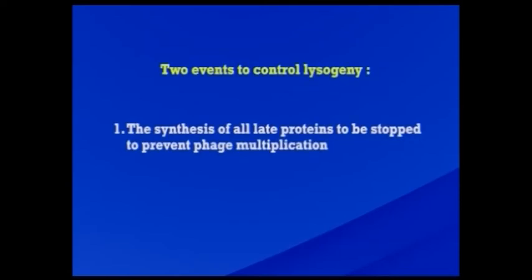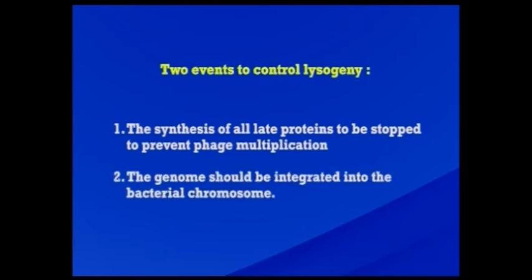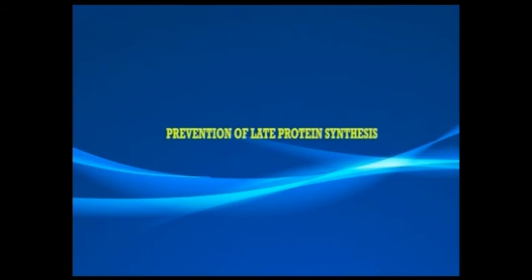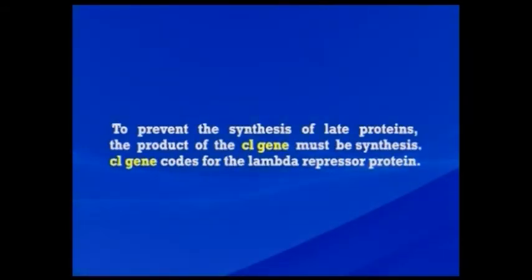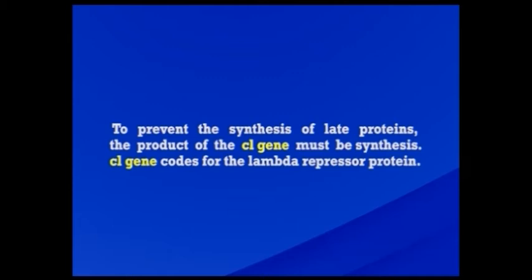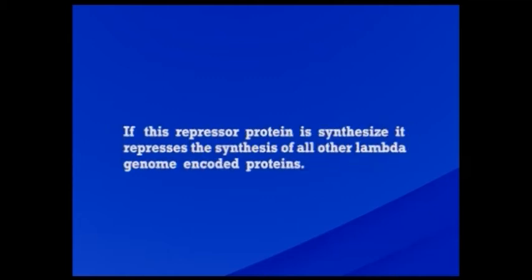Now we will discuss the control of lysogeny. To establish and maintain lysogeny, two events are necessary: the synthesis of all lytic proteins must be stopped to prevent phage multiplication, and the genome must be integrated into the bacterial chromosome. To prevent lytic protein synthesis, the product of the CI gene must be synthesized. The CI gene codes for the lambda repressor protein, and if this repressor protein is synthesized, it represses the synthesis of all other lambda genome-encoded proteins.